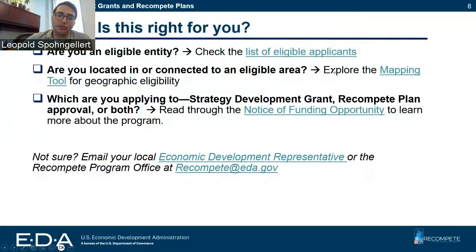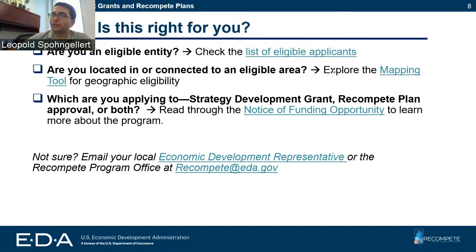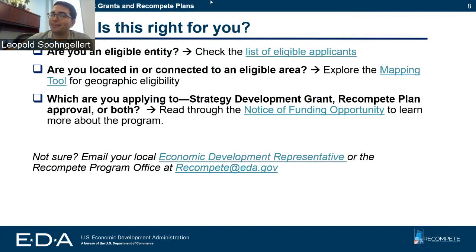Today we're going to take you through the steps you might go through in our EDGE system in applying for Recompete, and then we're going to talk through the required and additional documents. Step zero, before you get into EDGE or anything, is deciding if this is the right opportunity for you. We know there are a lot of different opportunities out there, so we want you to feel good about applying. One thing you need to make sure before you decide to apply is whether you are an eligible entity.